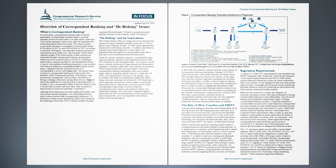Correspondent banking underpins trade finance, migrant remittances, and humanitarian flows. A typical Correspondent Banking arrangement is one in which two financial institutions — respondent banks — employ a third party, a separate financial institution known as a Correspondent or Service-Providing Bank. The various types of services Correspondent Banking provides include wire transfers, check clearing and payment, trade finance, cash and treasury management, and securities, derivatives, or foreign exchange settlement, among other services.